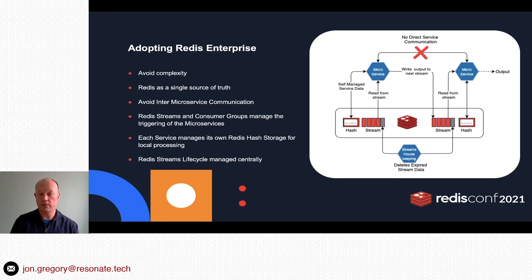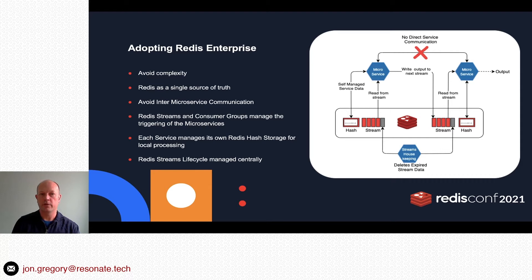Each service manages its own Redis area for local processing — they can scale, restart, clear out and start again. The Redis Streams themselves act as the bridge between services, either holding intermediary data or the calculated and processed data that forms the seven-year archive. We manage that centrally to stay on top of intermediary streams without compromising the long-lived streams. All streams follow a single writer principle — they can have many readers, but generally only one service will populate a stream.